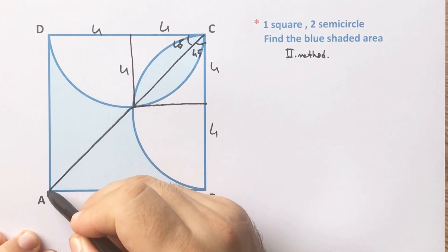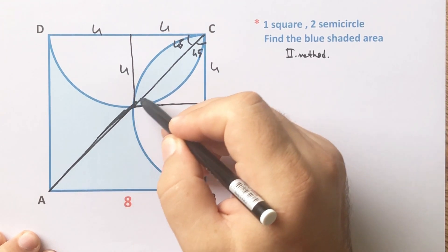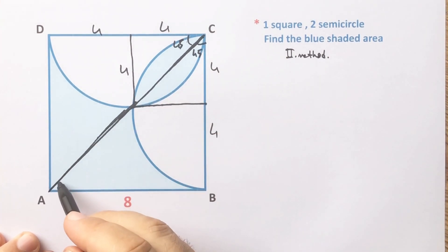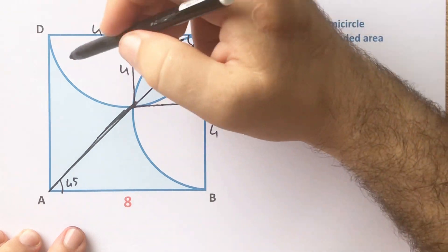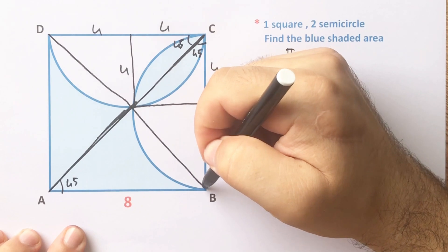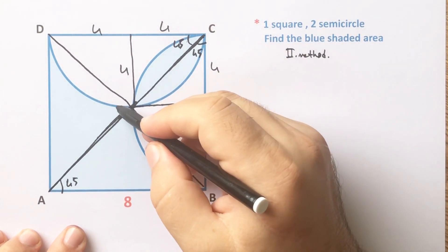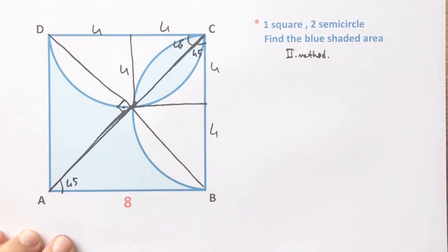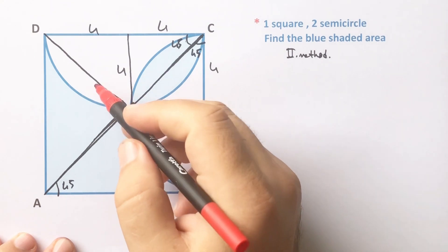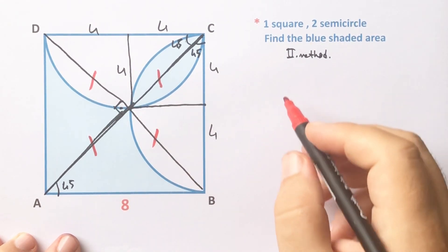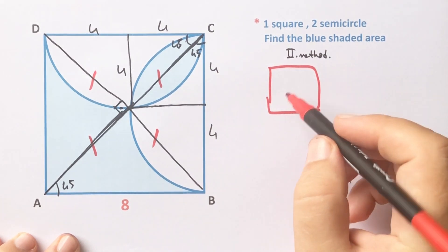If we extend this line, it is a diagonal of the big square, so here is also 45 degrees. Let's draw the other diagonal. You know that here must be 90 degrees because of the square. These four parts are equal.